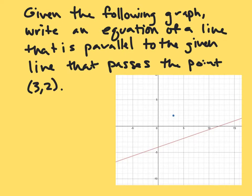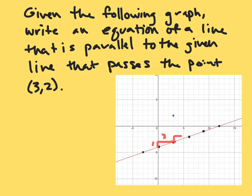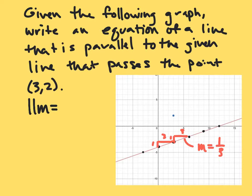Given the following graph, write an equation of a line that is parallel to the given line that passes through the point three, two. The first thing we need is to identify the slope of this line. Looking at a couple of different points on the graph, I find the stair step — rise over run. Going up one over three, my slope is m equals one third. Since parallel slopes are the same, our parallel slope is one third.